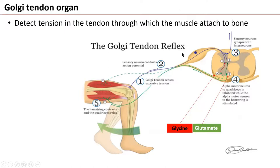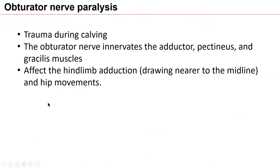The inhibitory neurotransmitter here is glycine and the excitatory neurotransmitter is glutamate. So the Golgi tendon organ senses tendon tension; when tension is very high it may damage the muscle, so when Golgi tendon organs are stimulated they prevent muscle contraction and protect the muscle. Clinically, obturator nerve paralysis occurs in cattle due to trauma during calving; the obturator nerve innervates the adductor muscles, so the hind limb cannot be drawn toward the midline — this is an example of peripheral nerve affection.